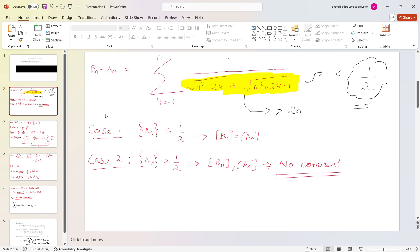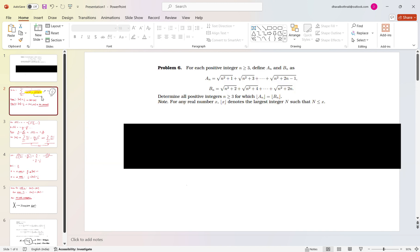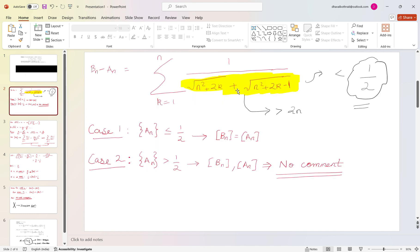So the next thing which I had done in the solution was I subtracted b_n minus a_n over here and then did the rationalization thing. Then in the denominator you will get the addition.